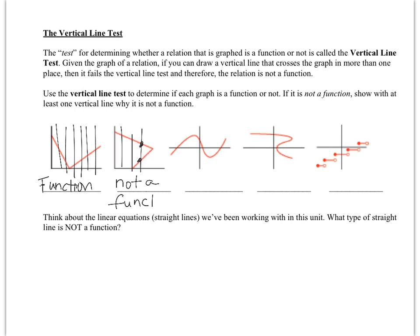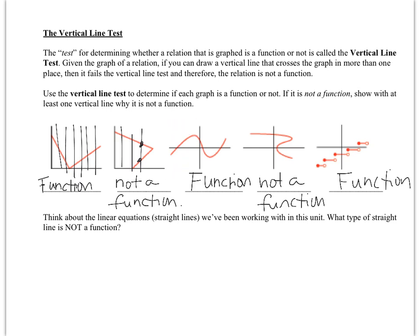Stop the video and apply the vertical line test to the next three graphs. The first passes — you never hit a point more than once — so it's a function. The second fails because a vertical line hits a point in three different places, so it's not a function. The third might be confusing: an open dot means that point does not exist, while a closed dot means it does. So even though they appear stacked, because one is an open dot, it passes the vertical line test and is a function.